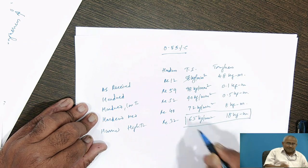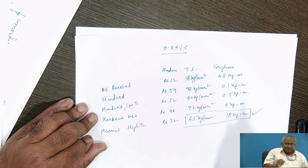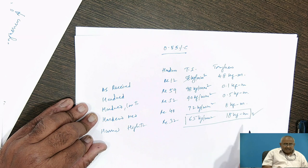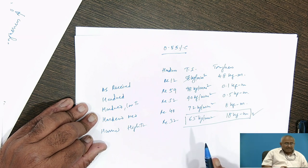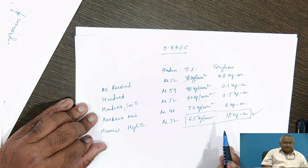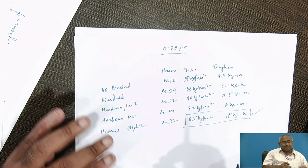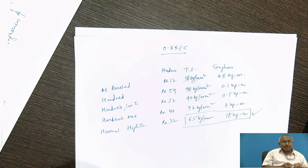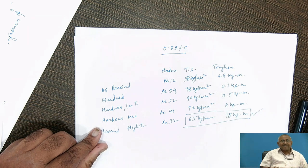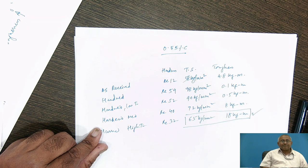This combination of strength and toughness, which is rarely achievable by other means, can be achieved by hardening and tempering. If this hardening and tempering treatment cycle is properly designed and implemented, we can get drastic improvement in fatigue life and the best possible combination of strength and toughness.